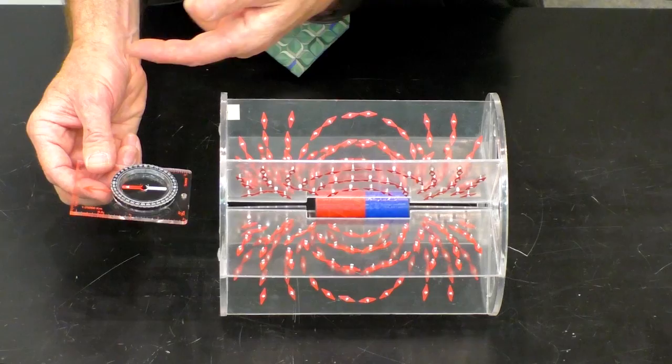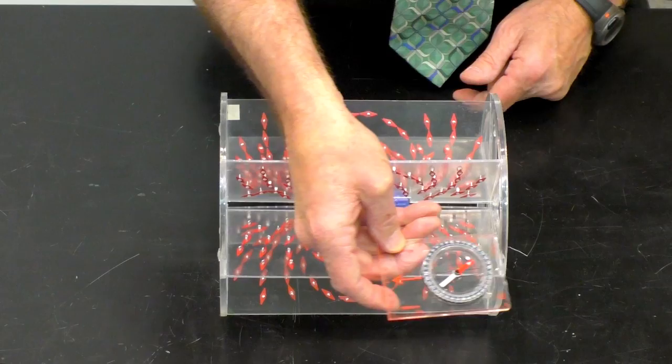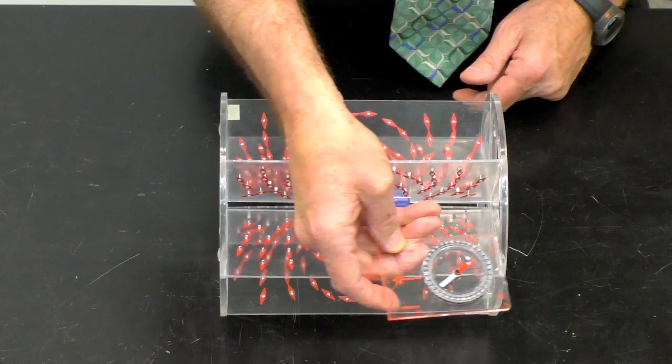So we've got a compass needle pointing this way, meaning that the magnetic field is that way, around and then in to the south pole, as denoted by all these little magnetic compass needles.